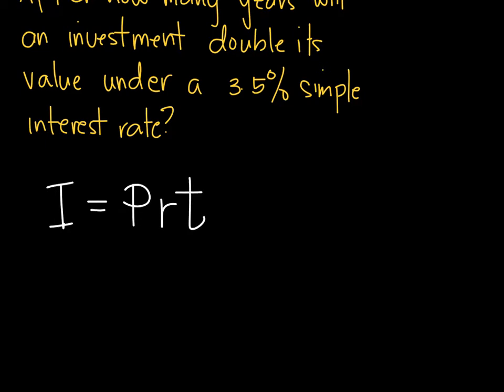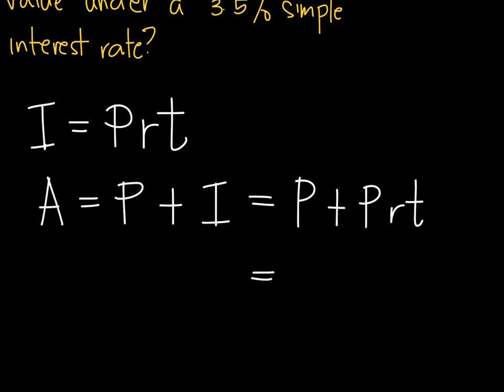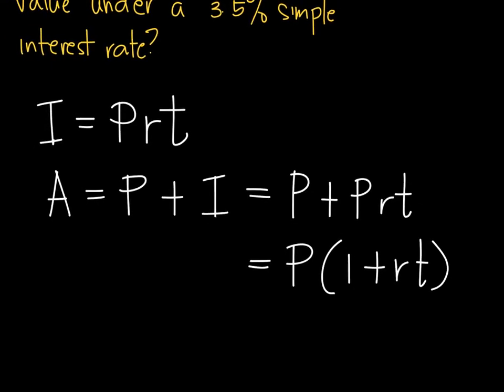Also, take note that any future amount, or what we call the future value, is just the principal plus the interest, in which we learn that this is P plus PRT, or equivalent to P times 1 plus RT. So this is also something that we can use when it is needed.